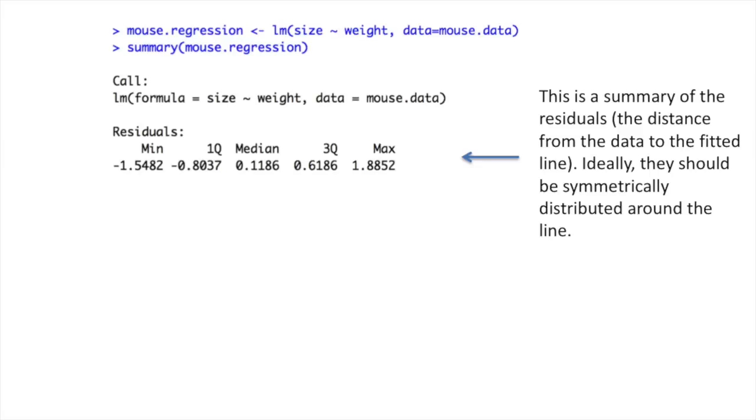That means you want the min value and the max value to be approximately the same distance from zero. Likewise, you'd like the first quantile, or 1Q, and the third quantile, or 3Q, to be equidistant from zero. Also, it's nice to have the median close to zero as well.